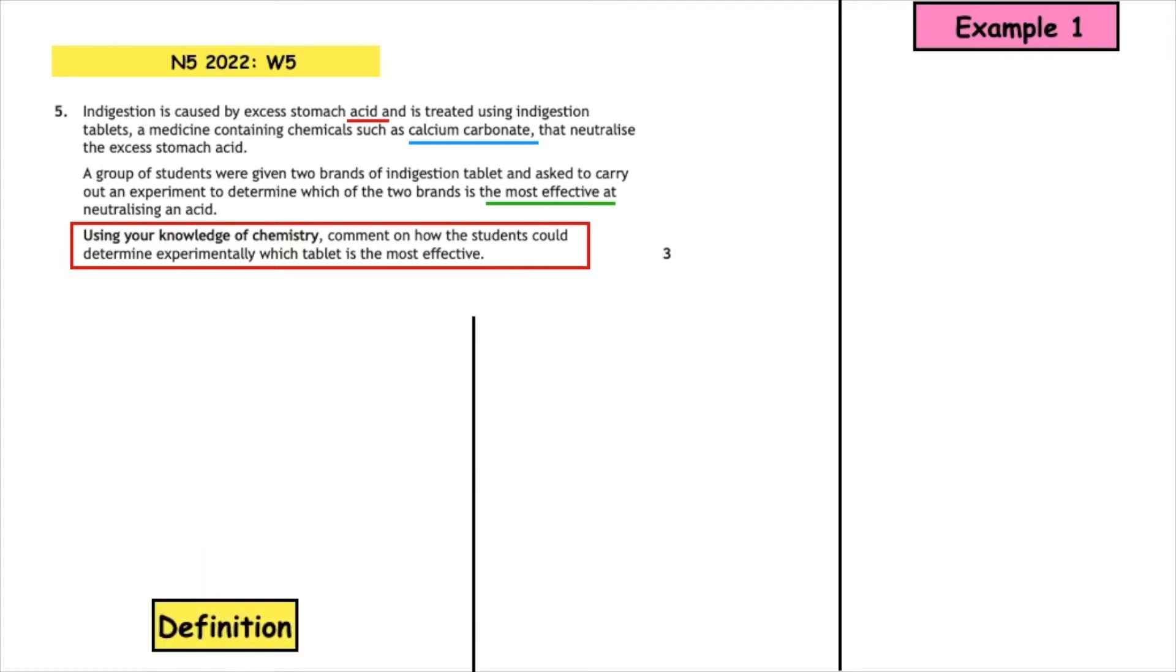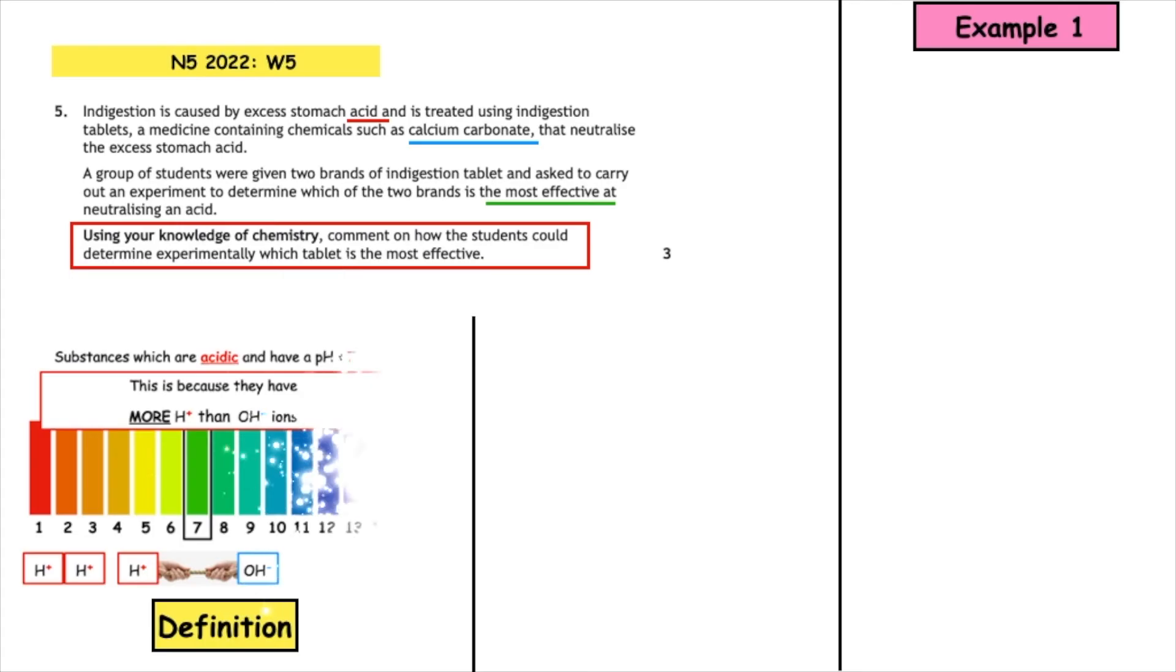So one of the key words was acid, so we could give the definition of an acid and that's when they have a pH less than seven. And this is because they have more H+ ions than OH- ions.